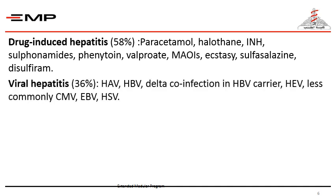Viral hepatitis constitutes about 36 percent of cases, with variable viruses including hepatitis A, B, E, delta co-infection with B carriers, and less commonly cytomegalovirus, Epstein-Barr virus, and herpes simplex virus hepatitis.